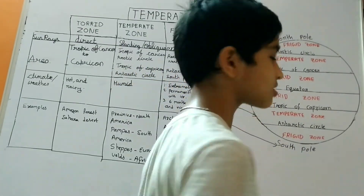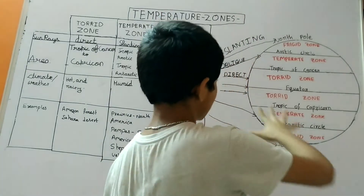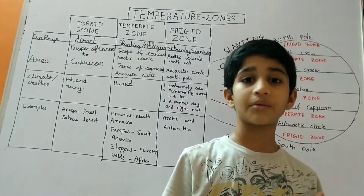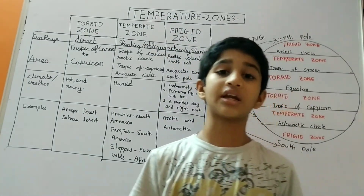Here, the sunlight is direct, and that is why it is very hot in the equatorial region.